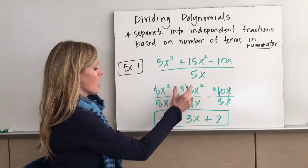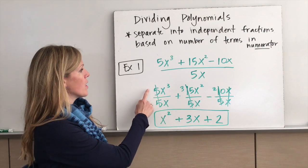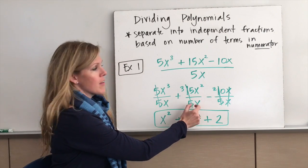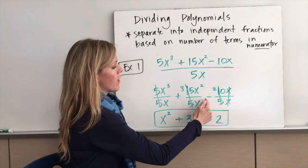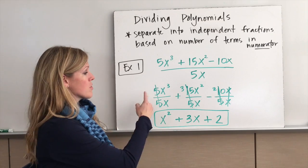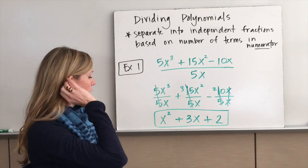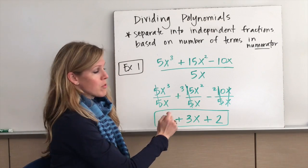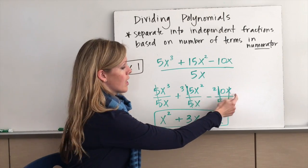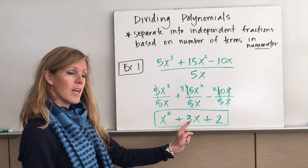So notice I've taken my denominator and made it the denominator of each of the fractions. I've crossed off to simplify here, but I took 5x³ and put it over 5x, I took 15x² and put it over 5x, and I took -10x and put it over 5x. Then what I did is used my exponent rules to simplify each of the problems. So 5 over 5, that simplifies to 1. x³ divided by x is x². 15 over 5, that simplifies to 3. x² divided by x is simply x. And then 10 over 5 simplifies to 2, and x over x simplifies to 1. So the answer to this division problem is x² + 3x + 2.